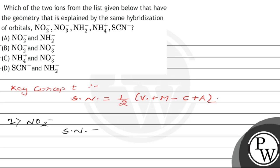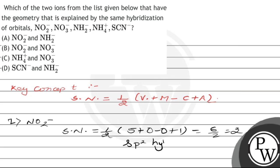For the first species, NO₂⁻: the steric number is calculated as half of the valence electrons of N (which is 5), plus number of monovalent atoms (0), plus cationic charge (0), plus anionic charge (1), giving 6/2 = 3. This corresponds to sp2 hybridization.